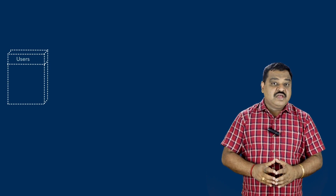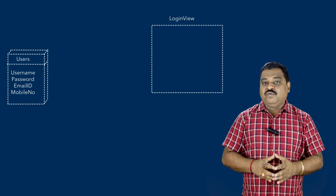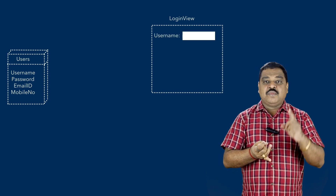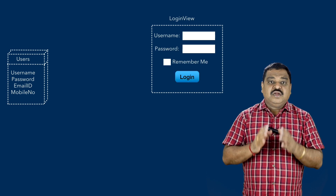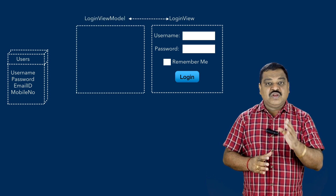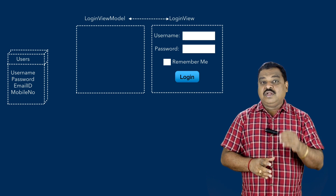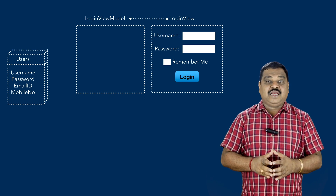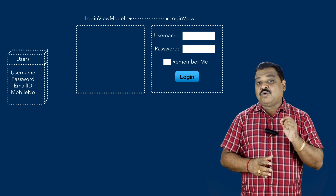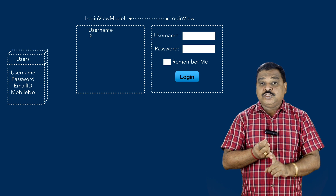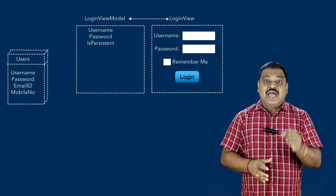Let us understand the MVVM architecture using a simple scenario. Say we have a model named Users with fields: username, password, email ID, and mobile number. We want to create a login view allowing users to log in, containing controls for username, password, a remember-me checkbox, and a login button. To support this, we create a LoginViewModel, which needs three properties to bind the username, password, and remember-me checkbox data.